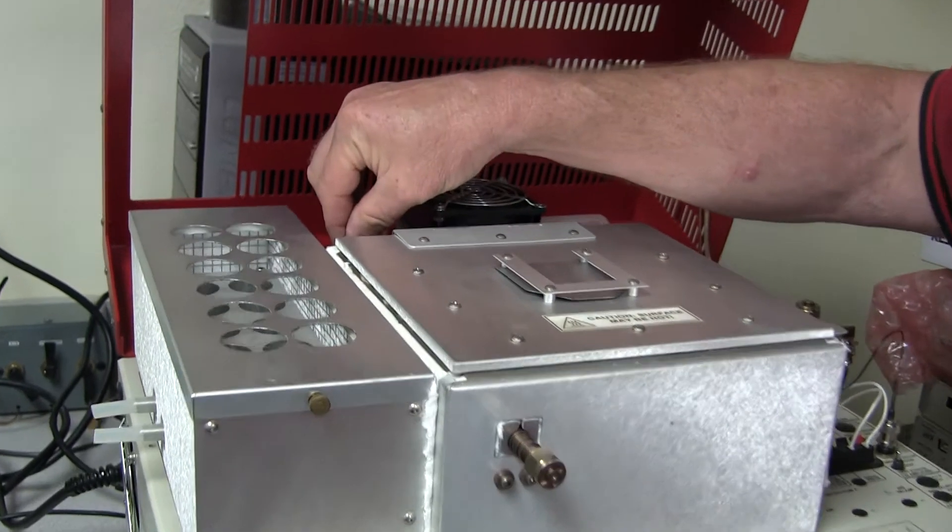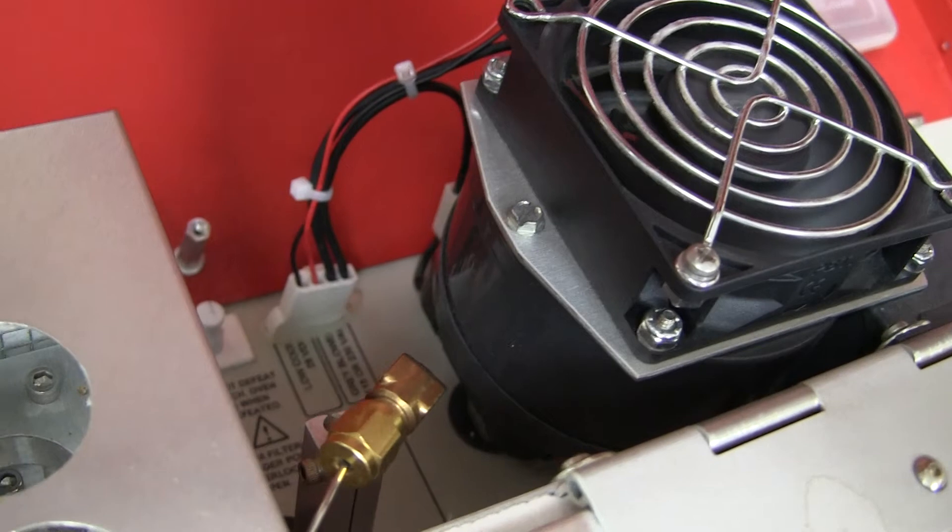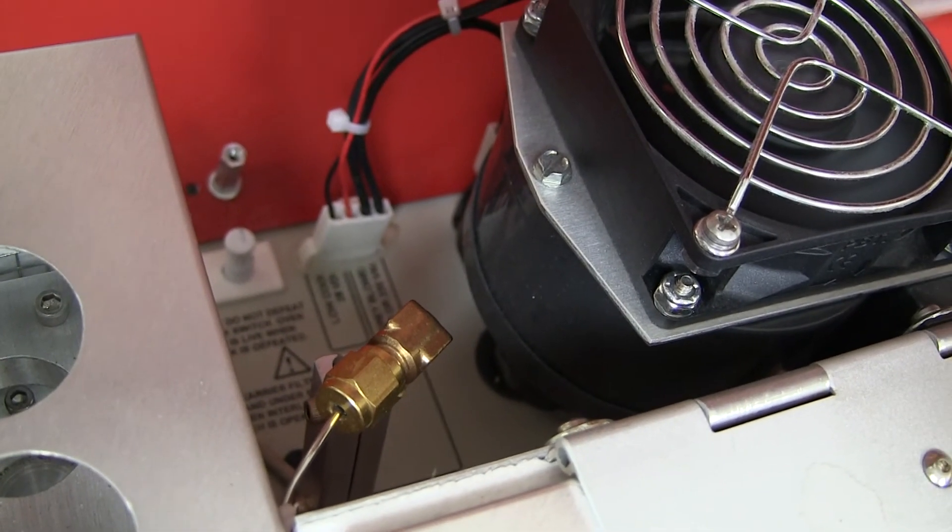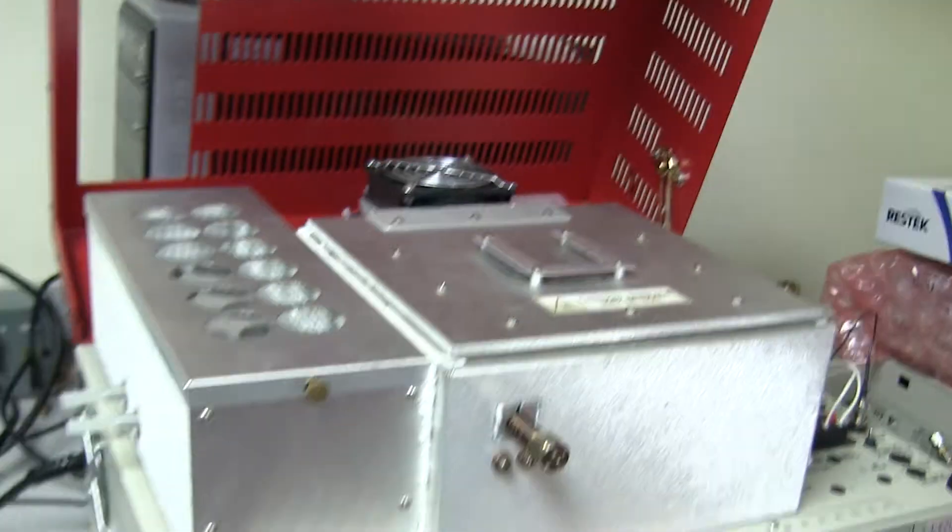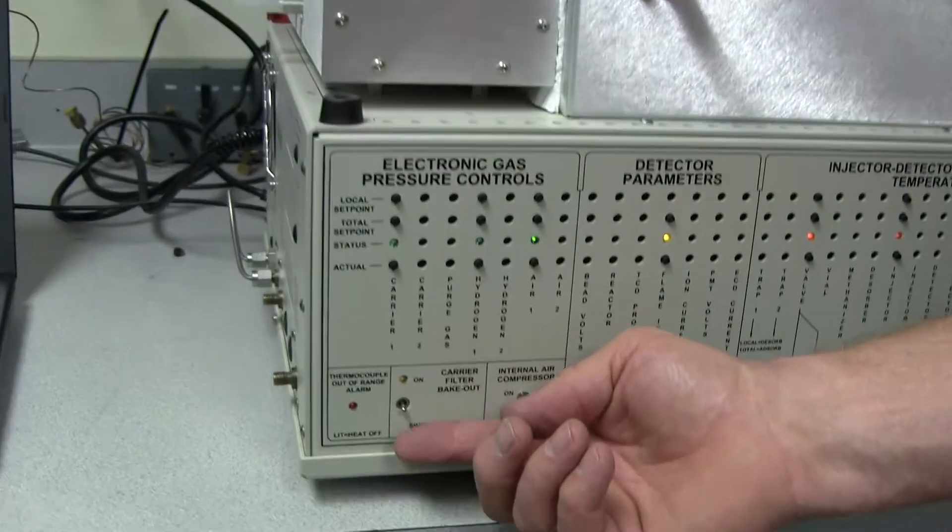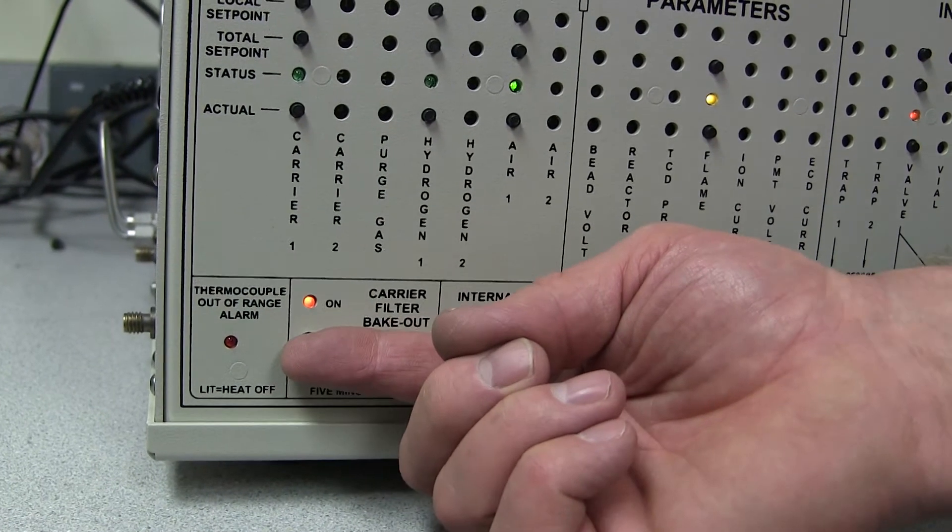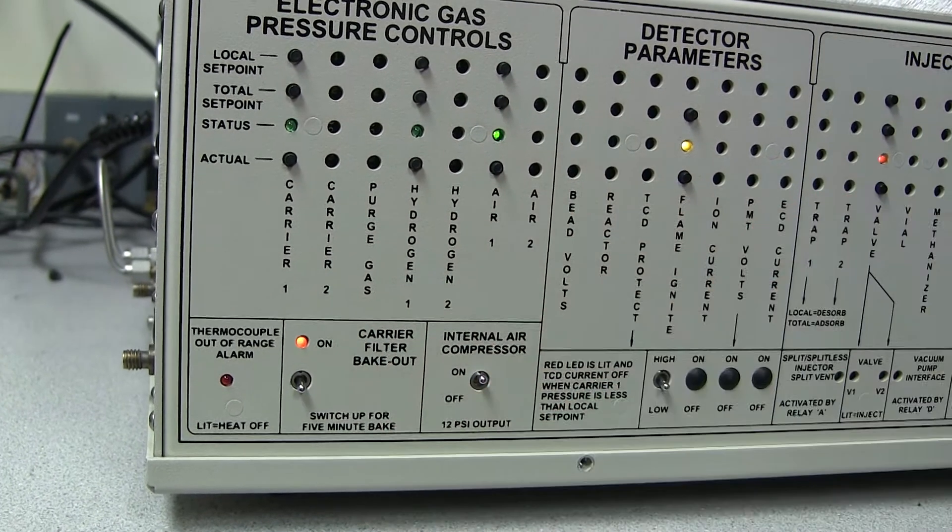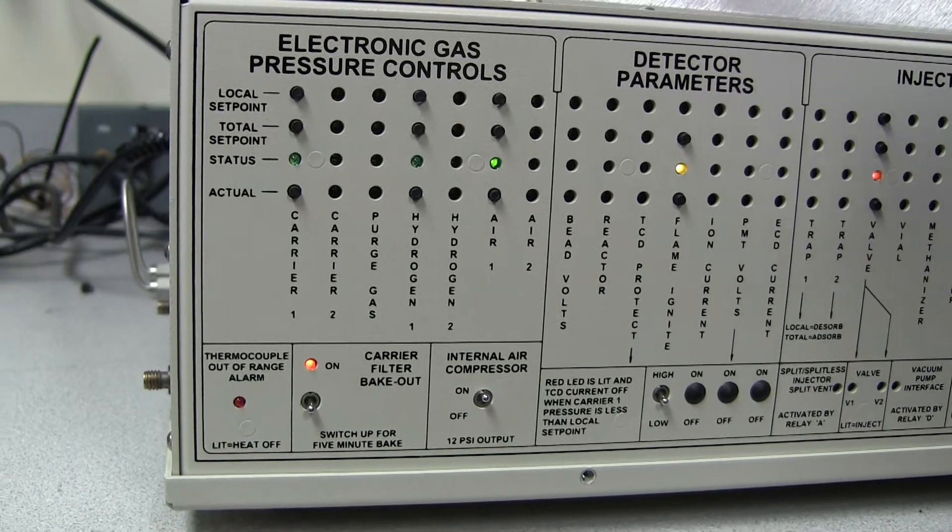When the polishing filter gets contaminated, it can sometimes cause drifting baselines or noise. So it's a good idea to periodically bake the polishing filter out. To do that, there's a switch on the front panel. It's a spring-loaded switch, so all you have to do is flip it to the up position, and the light goes on for five minutes, and the heater that's around the trap also goes on for five minutes.